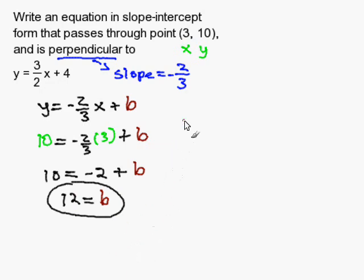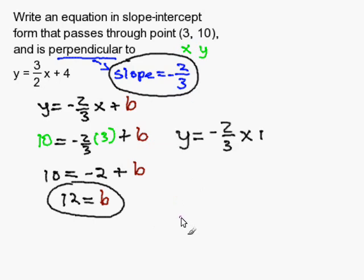Now that I have my y-intercept and I have my slope, I can write my slope-intercept equation, which is y equals negative 2 thirds x plus 12.